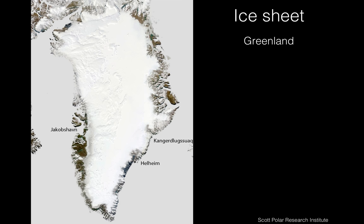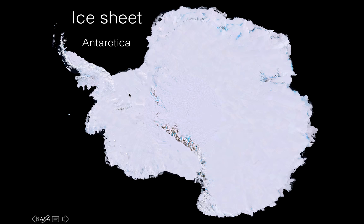There's also another frozen feature: the ice sheet. These are huge frozen continental masses, things like Greenland, which is a massive ice sheet. Similar to Greenland, we have Antarctica — another large continental ice sheet that contains enormous amounts of ice.